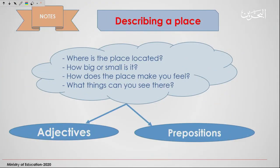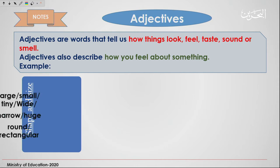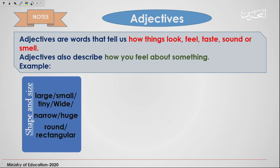When describing a place and answering these questions, we usually use adjectives and prepositions. Adjectives are words that tell us how things look, feel, taste, sound, or smell. Adjectives also describe how we feel about something. For example, when talking about shape and size, we usually say it is a large place, or this is a very large place, a small place, tiny, wide, narrow, huge, round, rectangular, and so on.